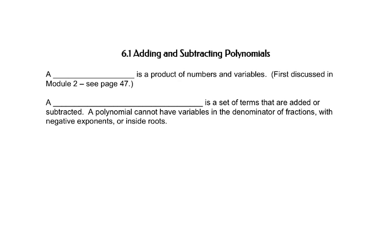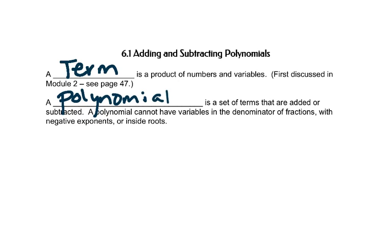In Chapter 6, Module 6, we'll be talking about polynomials. A term is a product of numbers and variables, and we talked about that a little bit in Module 2. A polynomial is a set of terms that are added or subtracted. A polynomial cannot have variables in the denominator of fractions, the variables cannot have negative exponents, and the variables cannot be inside square roots, or else it's not a polynomial.